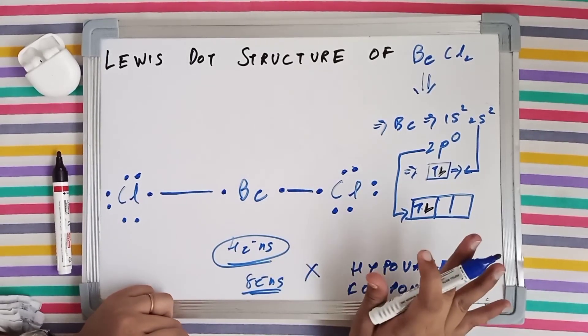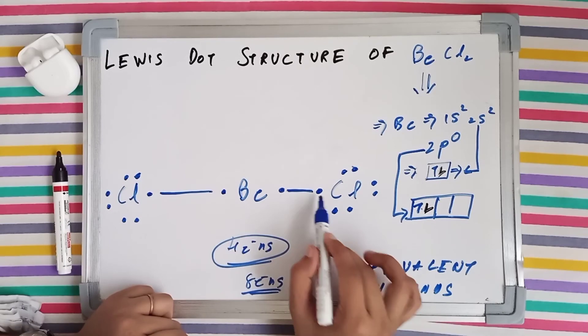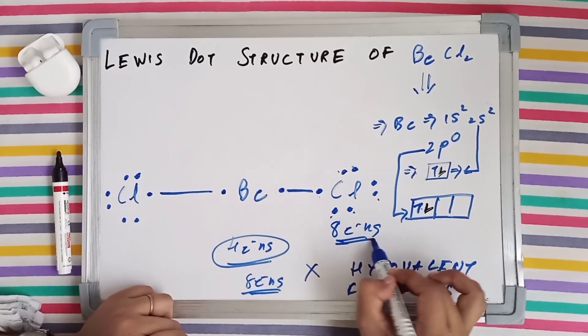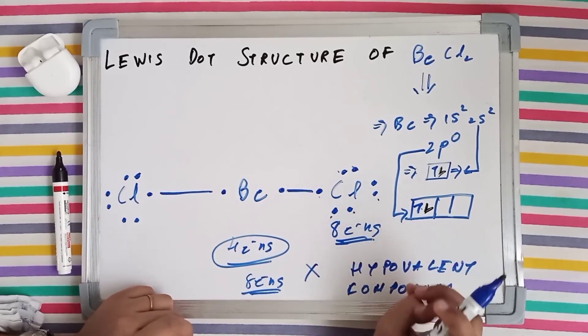But for chlorine, it has completed its octet. Let's see, 1, 2, 3, 4, 5, 6, 7, 8. It has got 8 electrons after bond formation. So chlorine has followed Lewis rule.